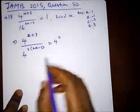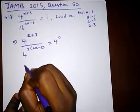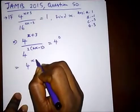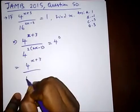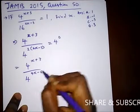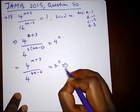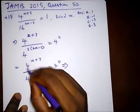So here what do we have? We have 4 raised to x plus 3 over 4. Opening the brackets we have 4x minus 6 equal to 4 raised to power 0.